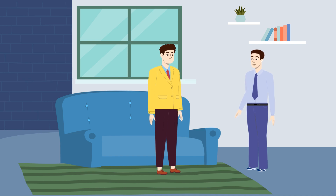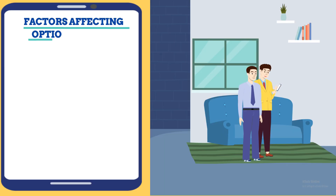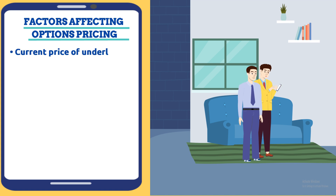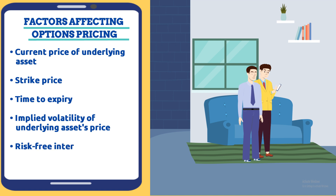Yeah, sure. Have you gone through the post on the eFinance Management website? Look here. So the primary factors affecting option pricing are: the current price of the underlying asset, strike price, time to expiry, implied volatility of the underlying asset's price, risk-free interest rate, and expected dividend.